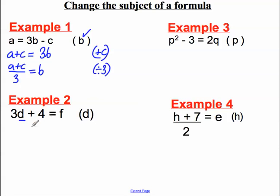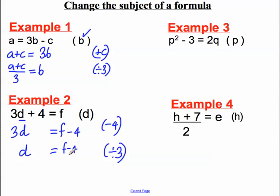I want to get rid of or undo this add 4. So, imagine I subtracted 4 from both sides. I would be left with, on the left-hand side, 3D. And on the right-hand side, I would still have my F, but I would have a subtract 4. I've got 3Ds. I don't want 3Ds. I want 1D. So, again, I can divide both sides by 3. That would leave me with D on the left-hand side is equal to F subtract 4, all divided by 3. I've made D the subject of the formula here.